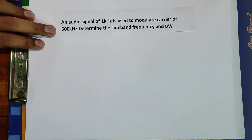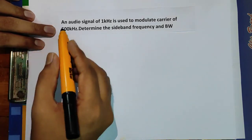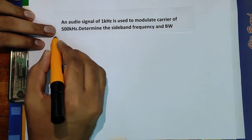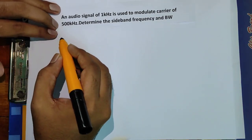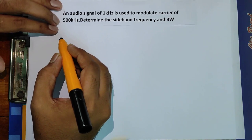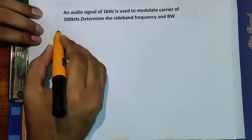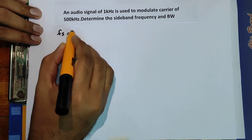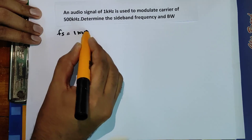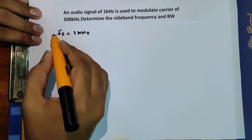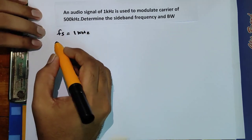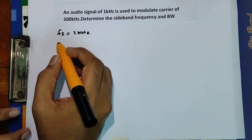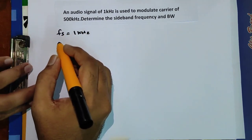Given quantities: the audio signal frequency fs = 1 kHz, and the carrier wave frequency fc = 500 kHz.